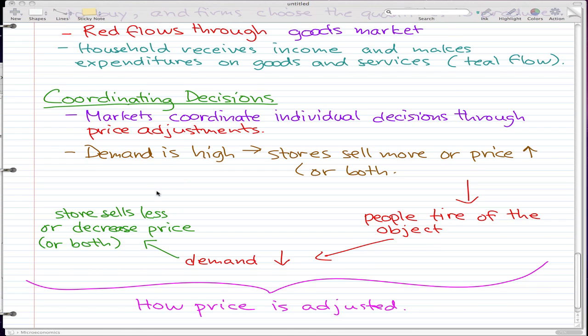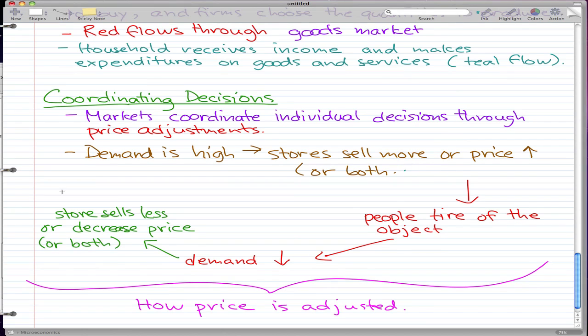And here's an example. So let's say the demand is high for a good, like let's say the iPhone or Blackberry. So let's say first it's a new iPhone version, and it's a new Blackberry version, and the demand is high. So the stores, they can sell more, or they can raise the price, or they can do both.